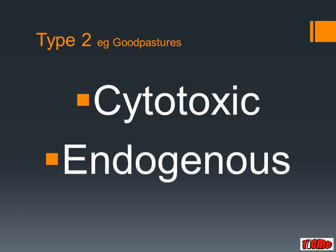There are four main types of hypersensitivity reactions. Type 2, which includes the disease process in Goodpasture's disease, is also known as cytotoxic hypersensitivity. The antigens which mediate this reaction are usually endogenous. The reaction time is minutes to hours and it's primarily mediated by antibodies of IgM or IgG.